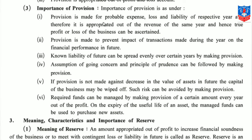Now, importance of provision: Provision is made for probable expense, loss and liability of the respective year, and therefore it is appropriated out of the revenue — that is, the income of the same year — and hence the true profit and loss of the business can be ascertained. Provision is made to prevent the impact of transactions made during the year on financial performance in future. We create provisions so that transaction impacts do not harm our future performance. Known liabilities of the future can be spread evenly over certain years by making provision. Assumptions of going concern and the principle of prudence can be followed by making provisions. If provision is not made against the decrease in value of assets in the future, the capital of the business may be wiped off — such risk can be avoided by making provision.